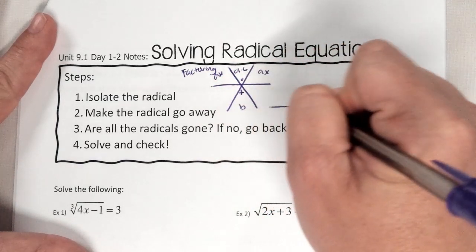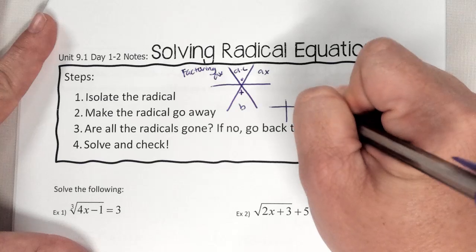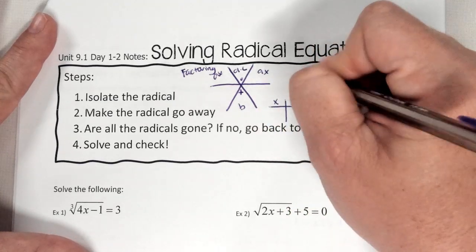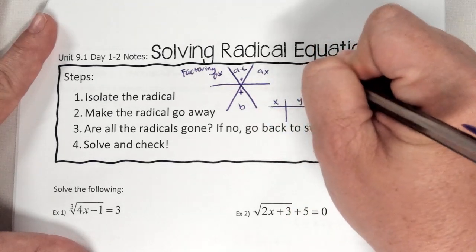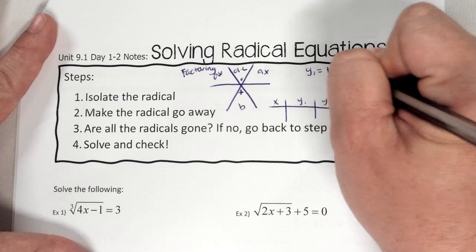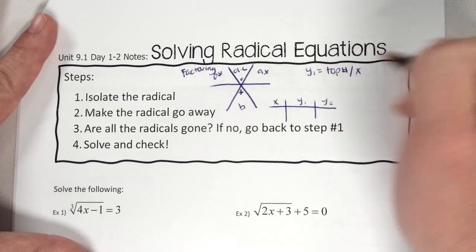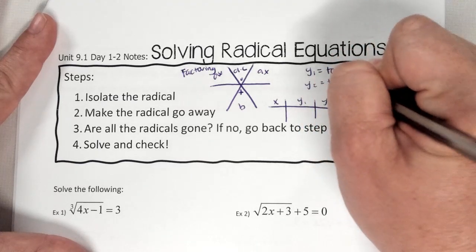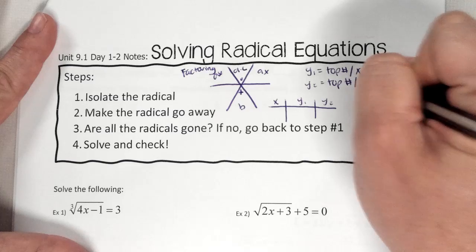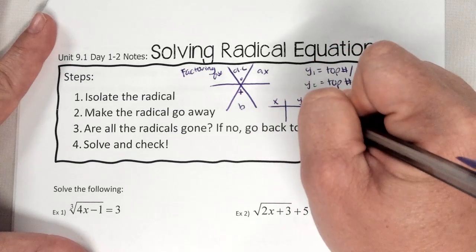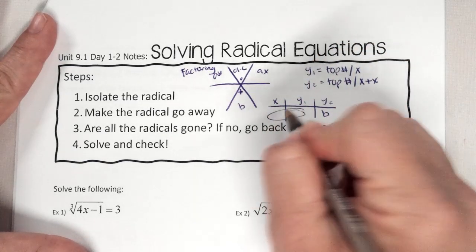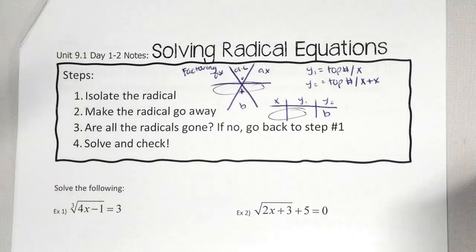You can use the table by putting in the top number divided by X, top number divided by X plus X. You look for B and Y2, and that tells you these numbers. Just a little refresher.